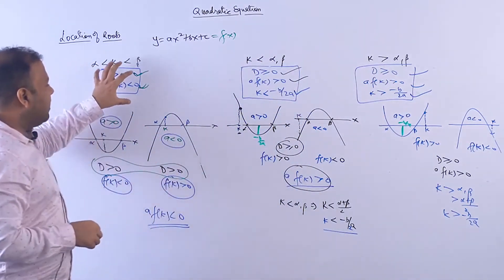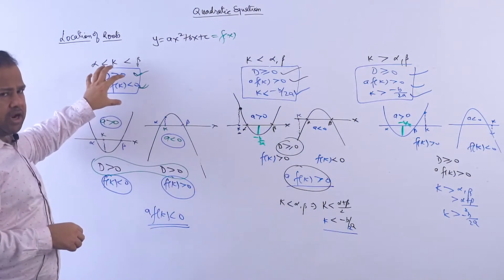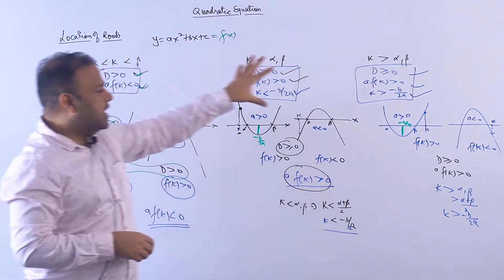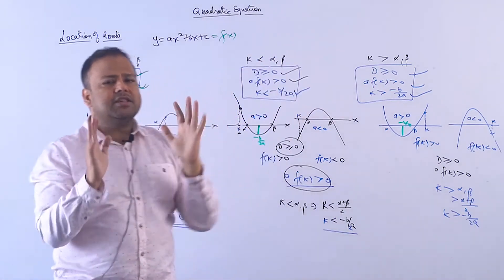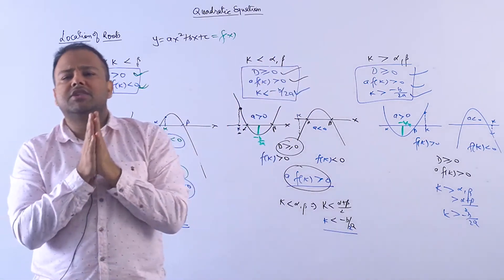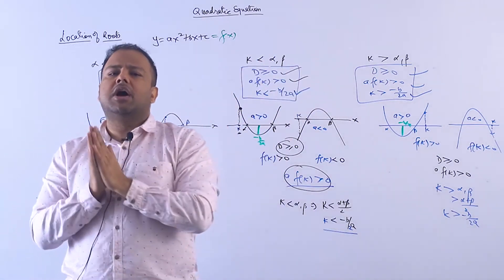So: inside alpha-beta has two conditions (D > 0, a·f(k) < 0), outside alpha-beta has three conditions (D ≥ 0, a·f(k) > 0, and k vs −b/2a). This is what these questions are all about.